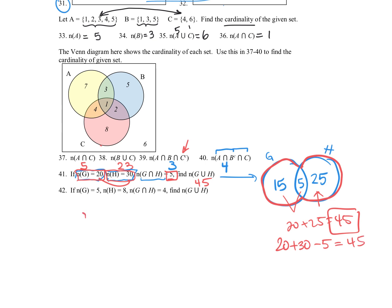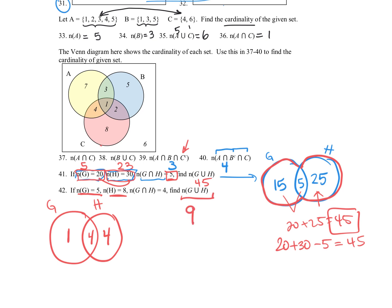For problem 42, I'll draw a picture. G and H have an intersection of four. If the total of G is five, then only one more element sits outside the intersection. For H, the total is eight, so four are in the non-overlapping part. For the union, adding 1 + 4 + 4 = 9. That's the same as taking the total of G plus the total of H and subtracting off the intersection to avoid double counting: 5 + 8 − 4 = 9.